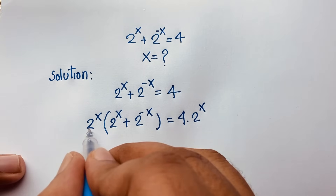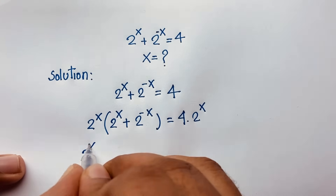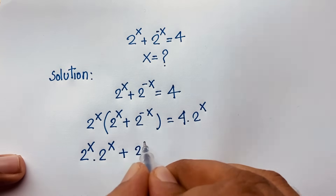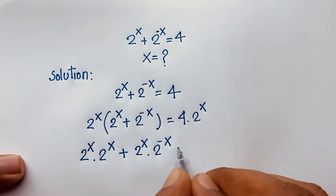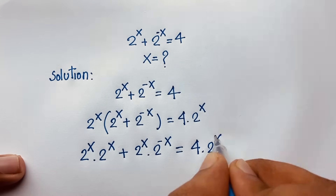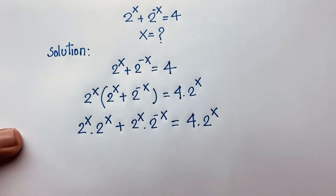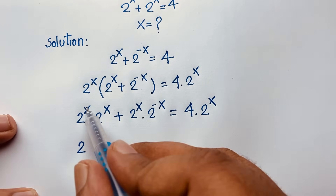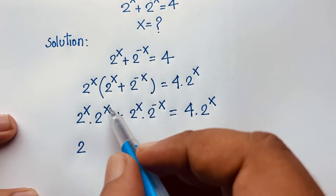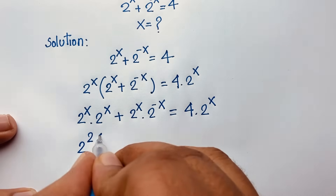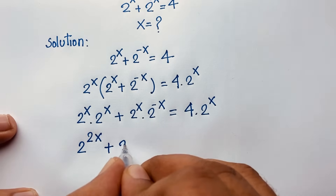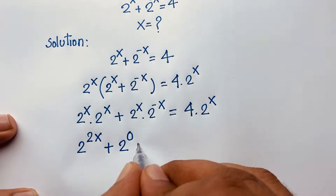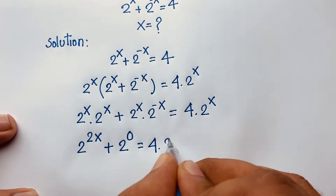Now, you can see that this times this — it will be 2 to the power x times 2 to the power x — plus this times this — it will be 2 to the power x times 2 to the power negative x — is equal to 4 times 2 to the power x. According to exponential law, a to the power n times a to the power m equals a to the power n plus m. So x plus x will be 2x, and for 2 to the power x times 2 to the power negative x, x plus negative x is 0. So that term equals 1. And here, 4 times 2 to the power x.